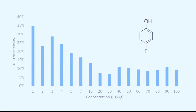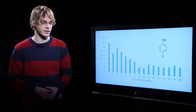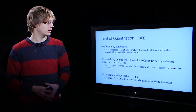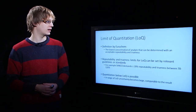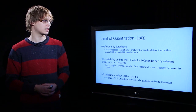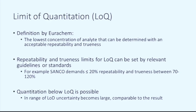This means that at lower concentration the relative uncertainty of the result is higher. At some concentration the results are even not fit for use anymore. We have therefore defined the limit of quantitation as the lowest concentration of analyte that can be determined with an acceptable repeatability and trueness.